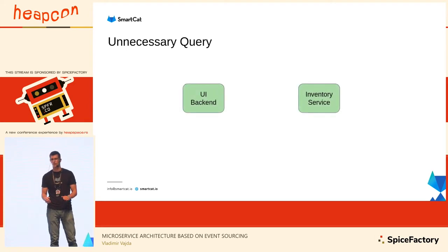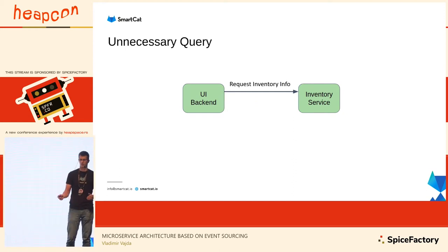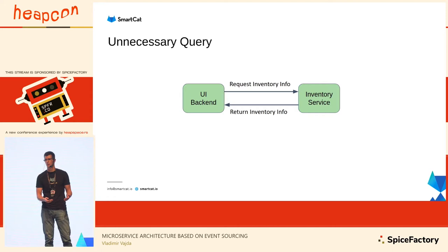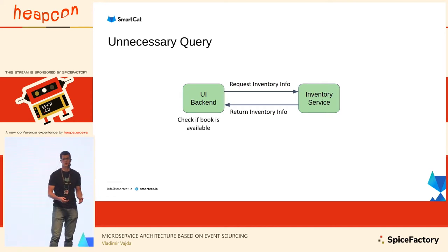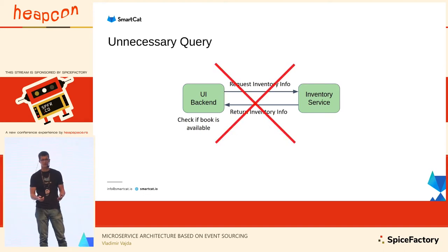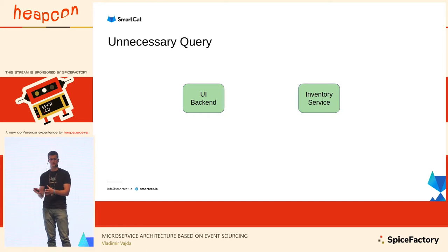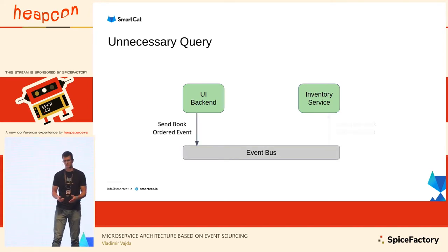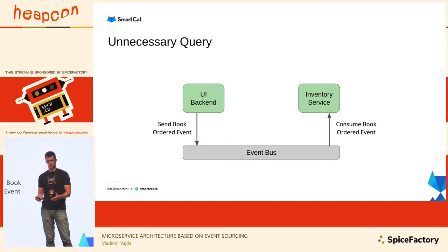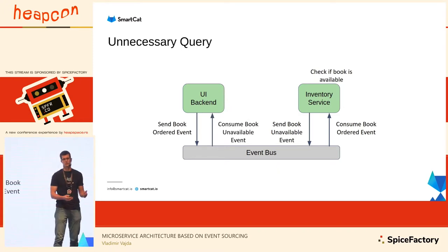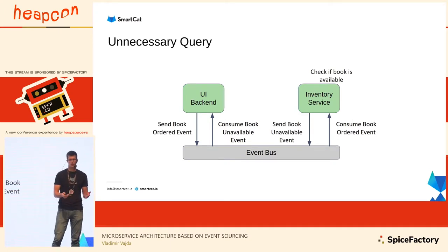For example, when the UI backend asks the inventory service for available books, the inventory service returns a response, and you make a decision based on it — checking if a book is available. This is not the best approach. The inventory service has all the information needed, so we should let it do all the decision-making. We just send a 'book ordered' event, and the inventory service consumes it; if there are no available books it creates a 'book unavailable' event, and the UI backend listens to those events to present to the user.